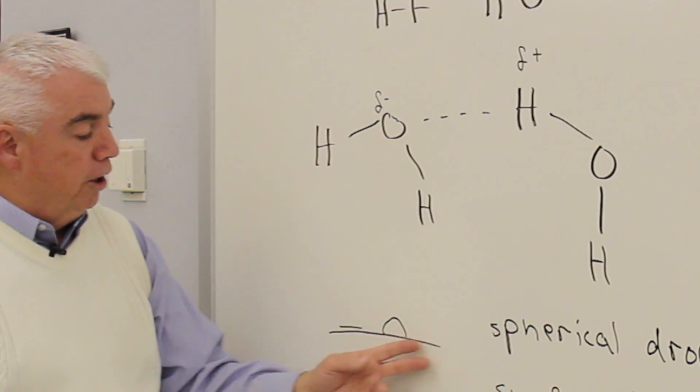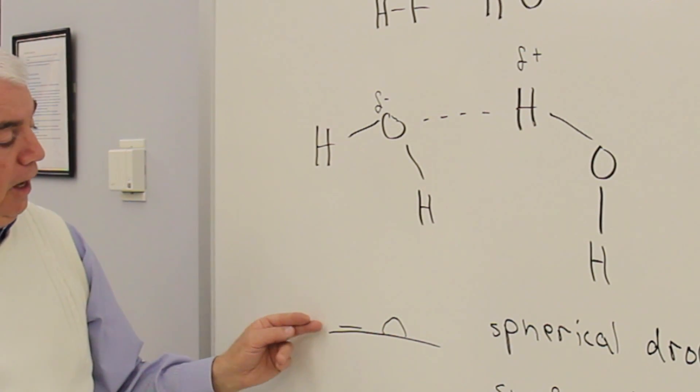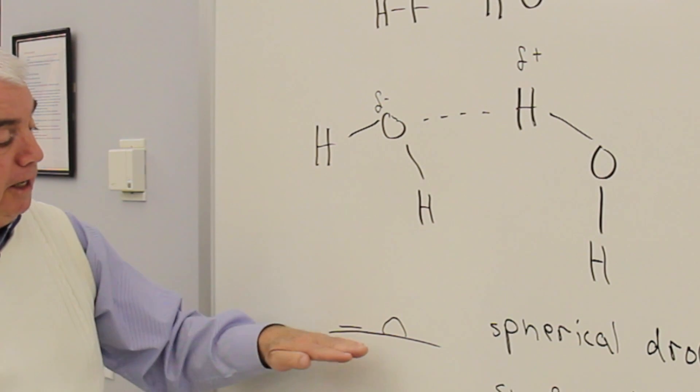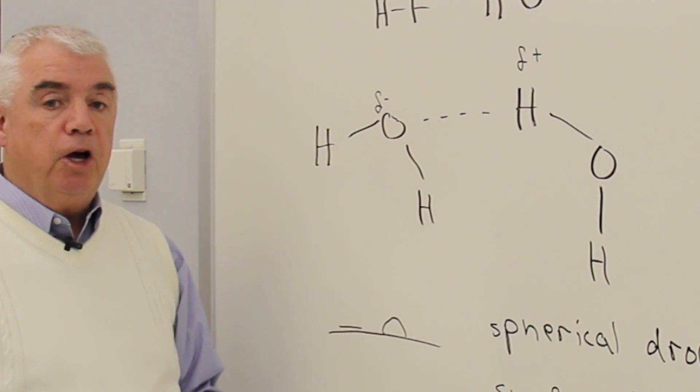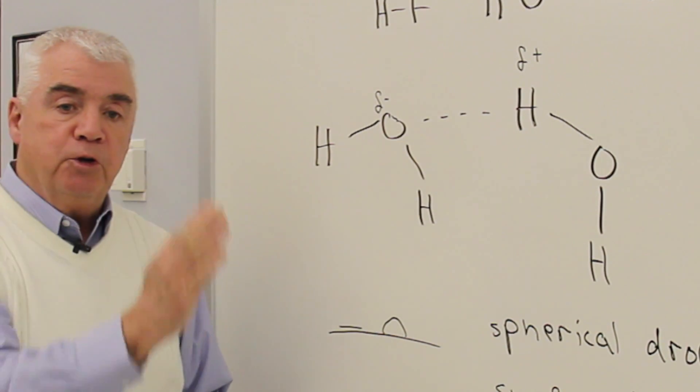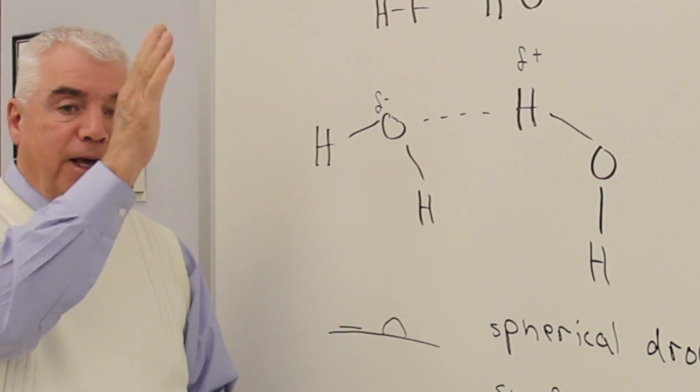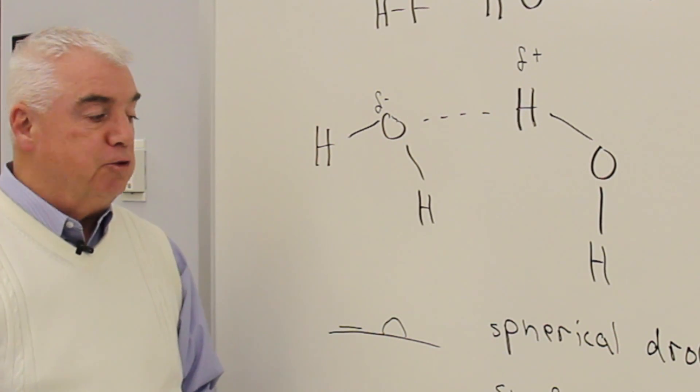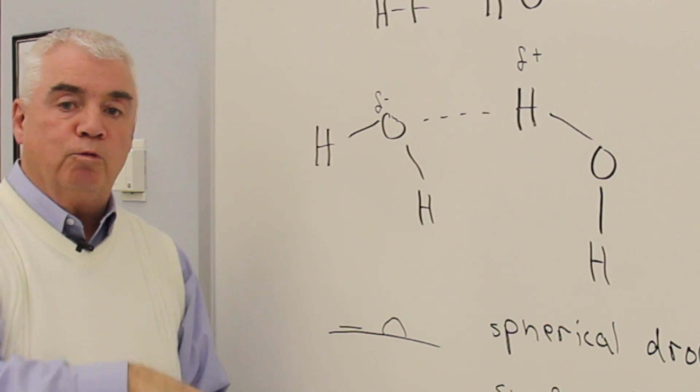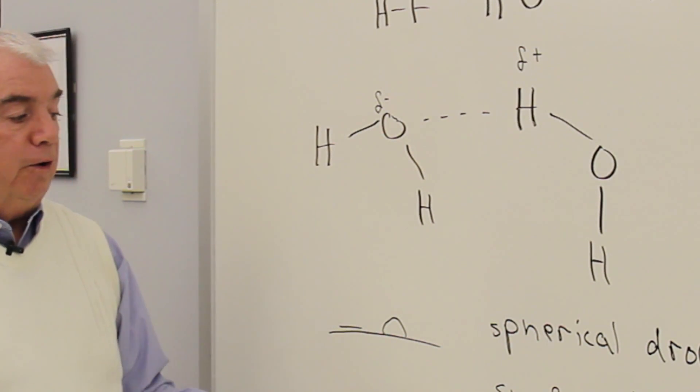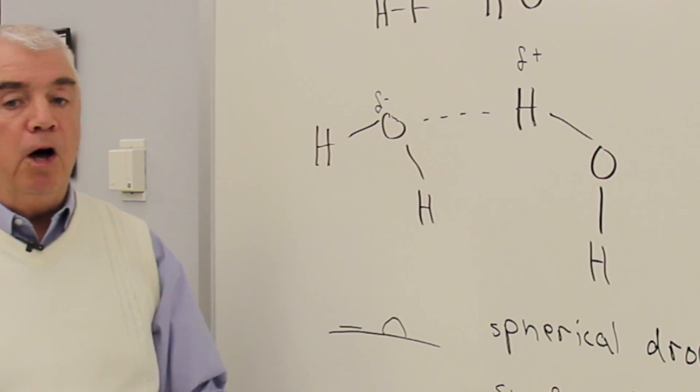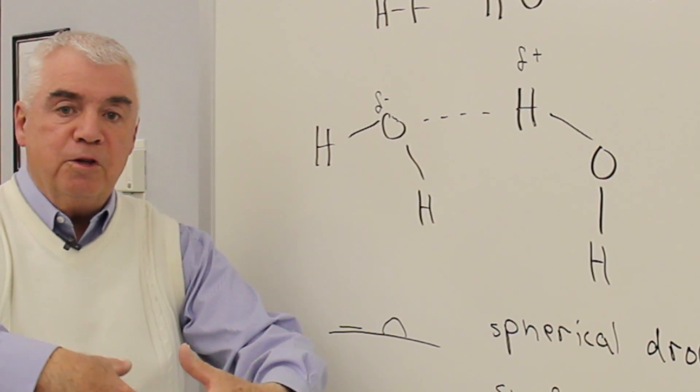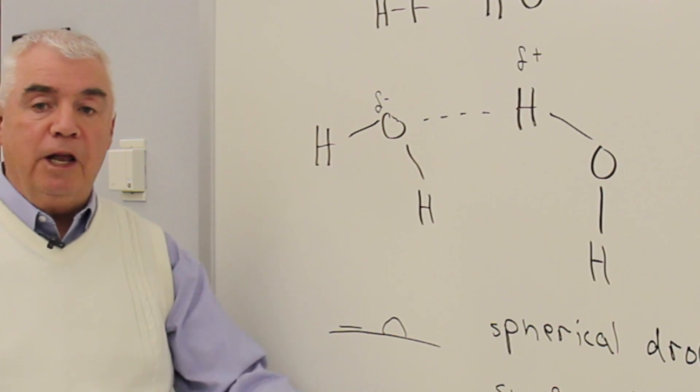So water, for example, on a surface isn't plain, in a plane, but oftentimes takes on a beaded shape. Or if you could observe water that was dropping, it wouldn't be dropping in a straight line, but you'd see individual drops dropping down. These spherical drops exist because the hydrogen bonding sort of pulls the molecules together, almost like a balloon.